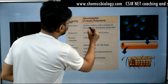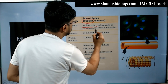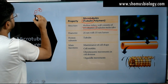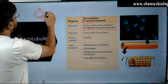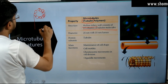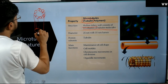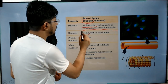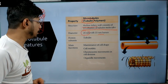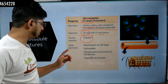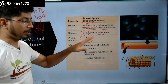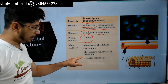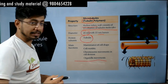The structure is hollow tubes; the wall consists of thirteen columns of tubulin molecules. The tubulin molecules arrange themselves — thirteen tubulin molecules — to form a hollow cylinder structure. That gives the structure strength. The diameter is twenty-five nanometers with a fifteen nanometer lumen. The protein is tubulin. Main functions are: maintenance of cell shape, motility of a cell, chromosome movement during cell division, and organelle movements inside the cell.